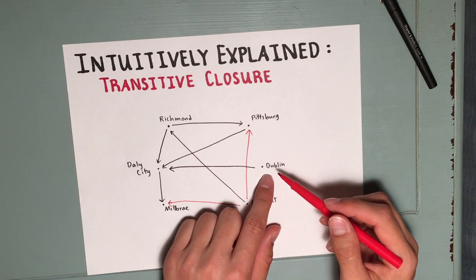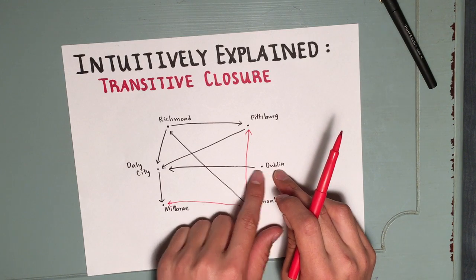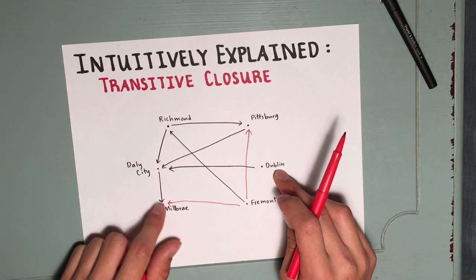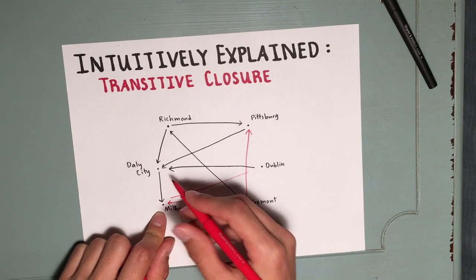Let's look at the next one. From Dublin, we have only one choice to go to Daly City, then only one more choice to go to Millbrae. So we include this additional arrow.